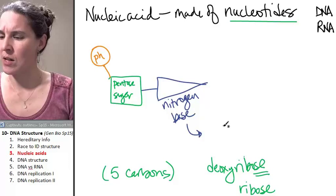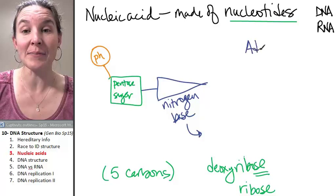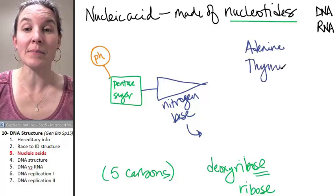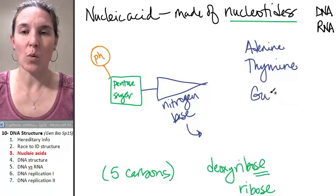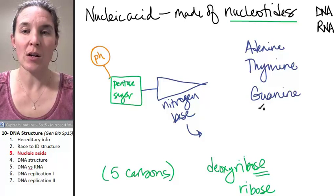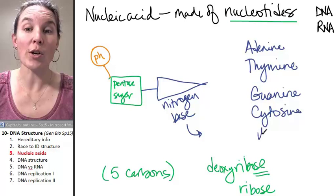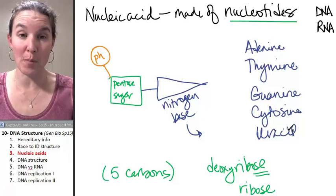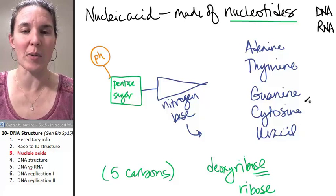So our nitrogen bases could be adenine, thymine, guanine, cytosine, or uracil. So these are our possible nitrogen bases. And we're going to look at their structure a little bit more as we get into what Watson and Crick discovered about this whole thing.